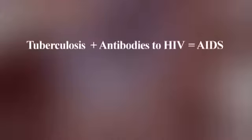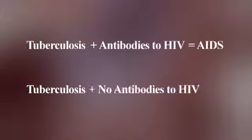They called it a disease; they said people are dying of a disease. Simply spoken, if you have tuberculosis and an antibody against HIV, then we call it AIDS. If you have tuberculosis but no antibody against HIV, now we call it tuberculosis as we used to. It's an old disease with a new name when we find antibody to the virus.